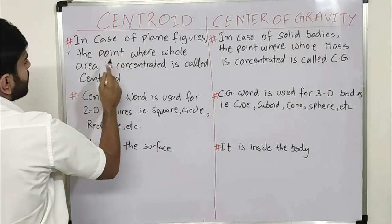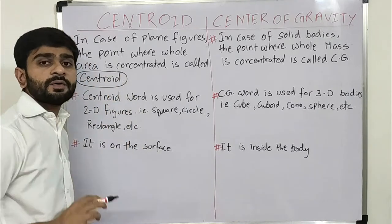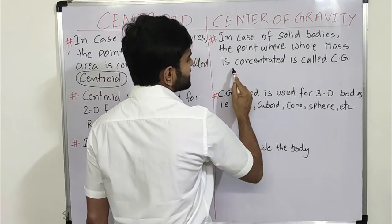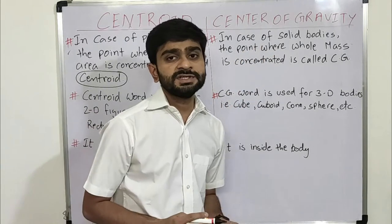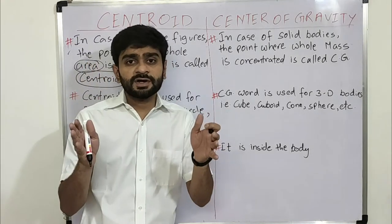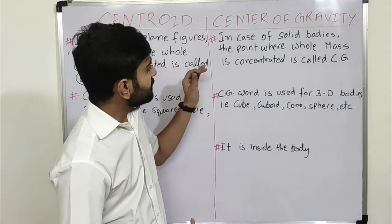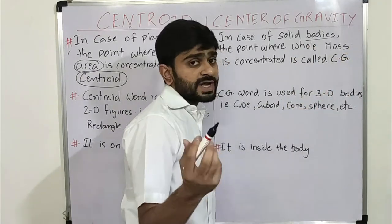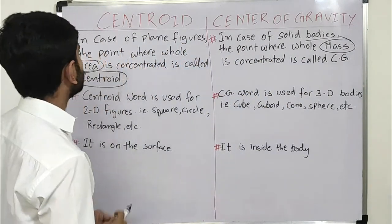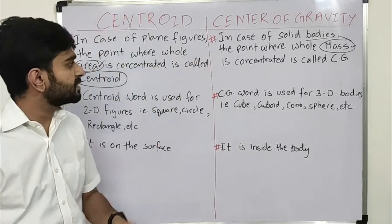In the case of plane figures, the point where the whole area is concentrated is called the centroid. In the case of solid bodies, the point where the whole mass is concentrated is called the center of gravity, or CG. So the main difference is: for centroid, area is concentrated at a point in a two-dimensional figure, while for center of gravity, the mass of a three-dimensional body is concentrated at a point.